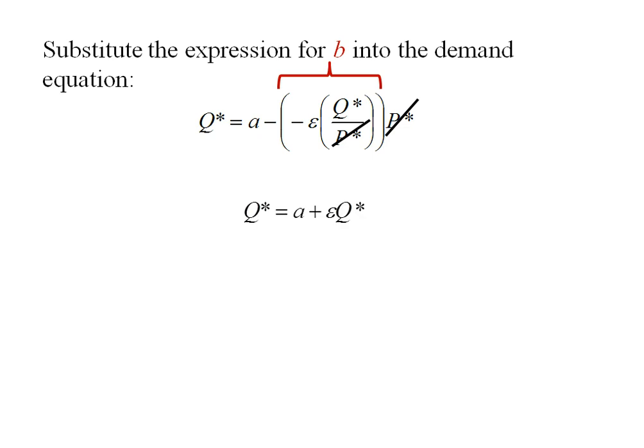So I've got Q star equals A plus elasticity times Q star. I can collect the Q star and solve for A by bringing negative elasticity times Q over to the left-hand side. I've collected out 1 minus E times Q star, and that equals A. This will be our other important formula to note. So now we've got a general formula for A and a general formula for B.